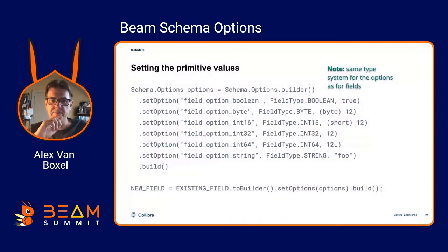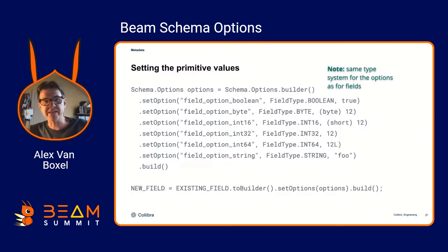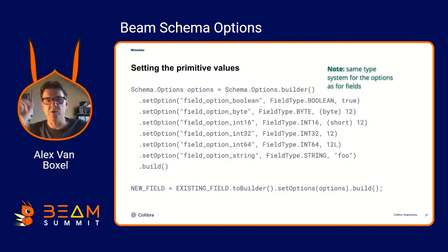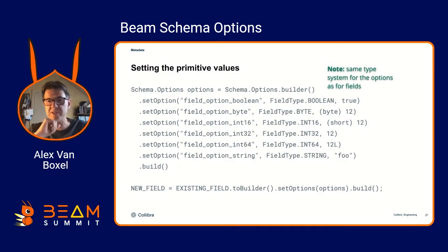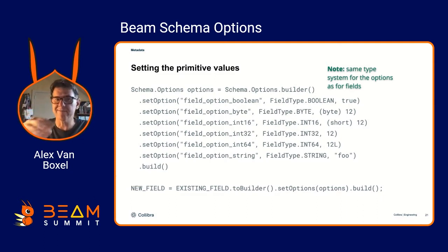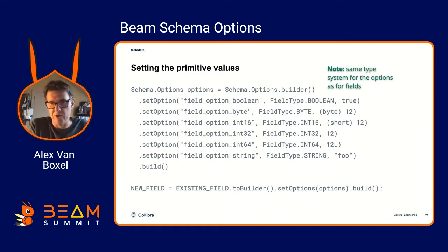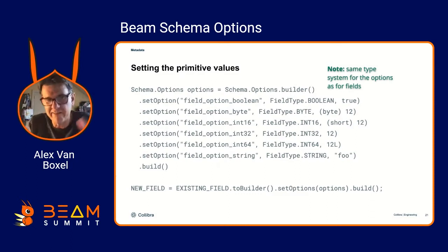First we needed an API. The API introduces extra fields — set options onto a field and a row. Both are important. We want restricted typing. The nice thing about the API is it uses the same type information Beam already uses. So you could have a string type with an option that is a boolean, and you do that by setting an option with that field type. It's exactly the same mechanism — you're just setting an extra field on your field.